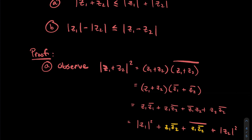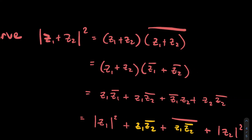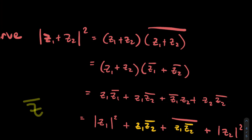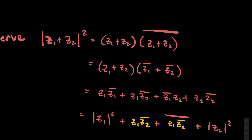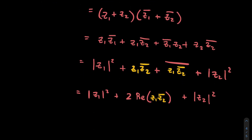In the middle terms, I want like terms. I rewrite z₂z̄₁ using the property that z̄̄ = z, giving z₂z̄₁ = (z̄₁z̄₂̄)̄ — so I see z₁z̄₂ and its conjugate. Using the fact that a complex number plus its conjugate equals twice the real part: z₁z̄₂ + z̄₁z₂ = 2·Re(z₁z̄₂).